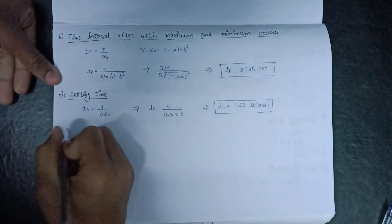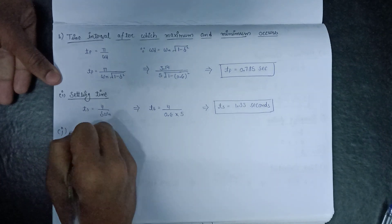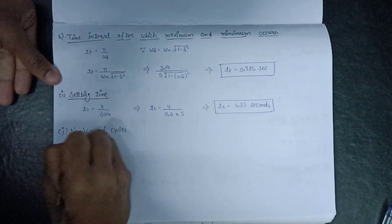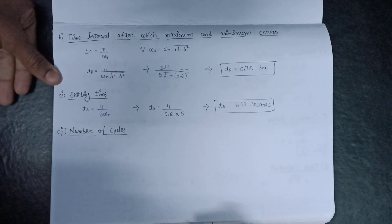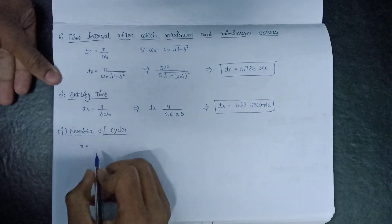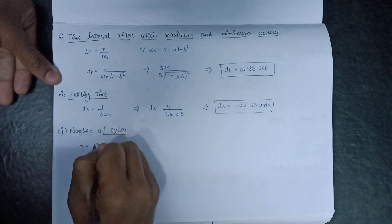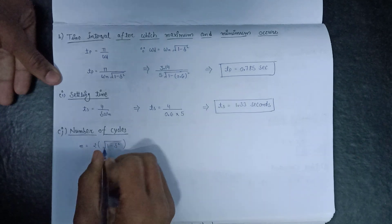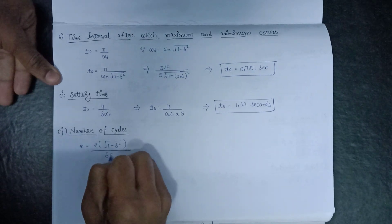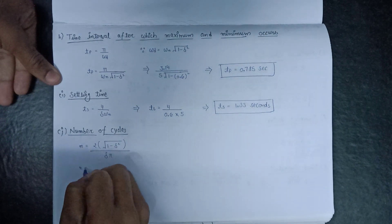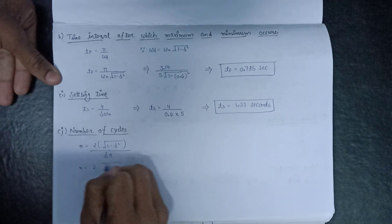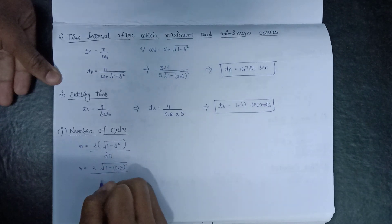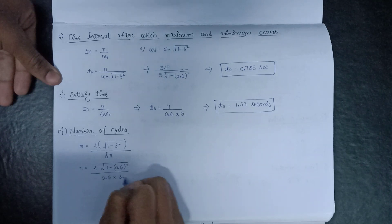Moving on to the number of cycles, denoted by N. The formula is: N = (2√(1−δ²)) / (δπ). Substituting δ = 0.6 and π = 3.14: N = (2 × √(1−0.36)) / (0.6 × 3.14) = (2 × 0.8) / 1.884.